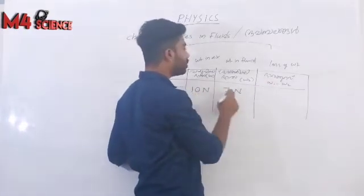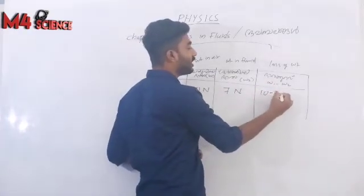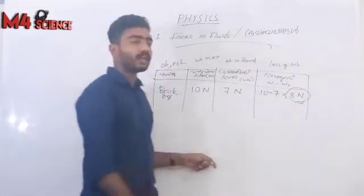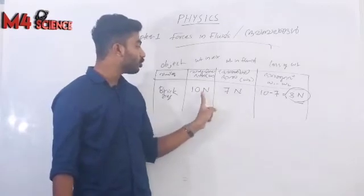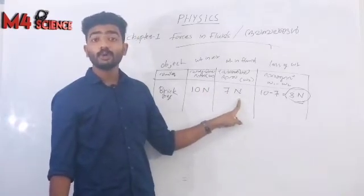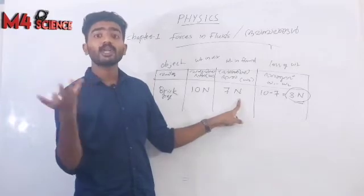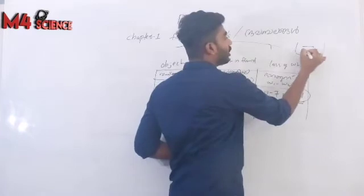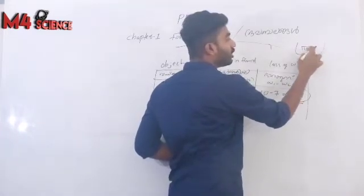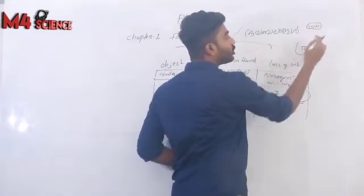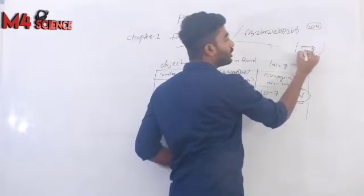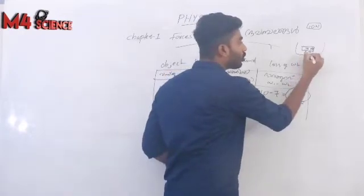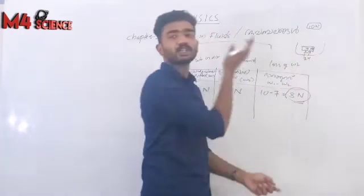W1 minus W2 — this is what you calculate. 10 minus 7 is 3 newtons. After 10 newtons you will get 10 newtons and 7 newtons. That 3 newtons are given to you. This is the same way. This is 10 newtons. If you take the 3 newtons on top, you will get 3 newtons.